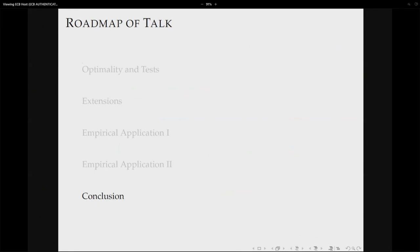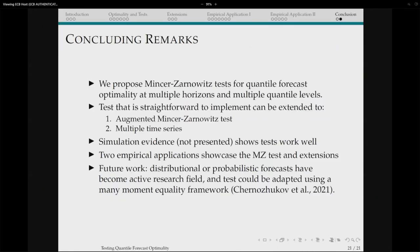In summary, we propose a Mincer-Zarnowitz-type test for quantile forecast optimality at multiple horizons and multiple quantile levels — practically very relevant. We provide two extensions: the augmented Mincer-Zarnowitz test for stronger calibration and an extension to multiple time series. Simulation evidence shows the tests work well in finite samples, and we have two large empirical applications illustrating their usefulness.